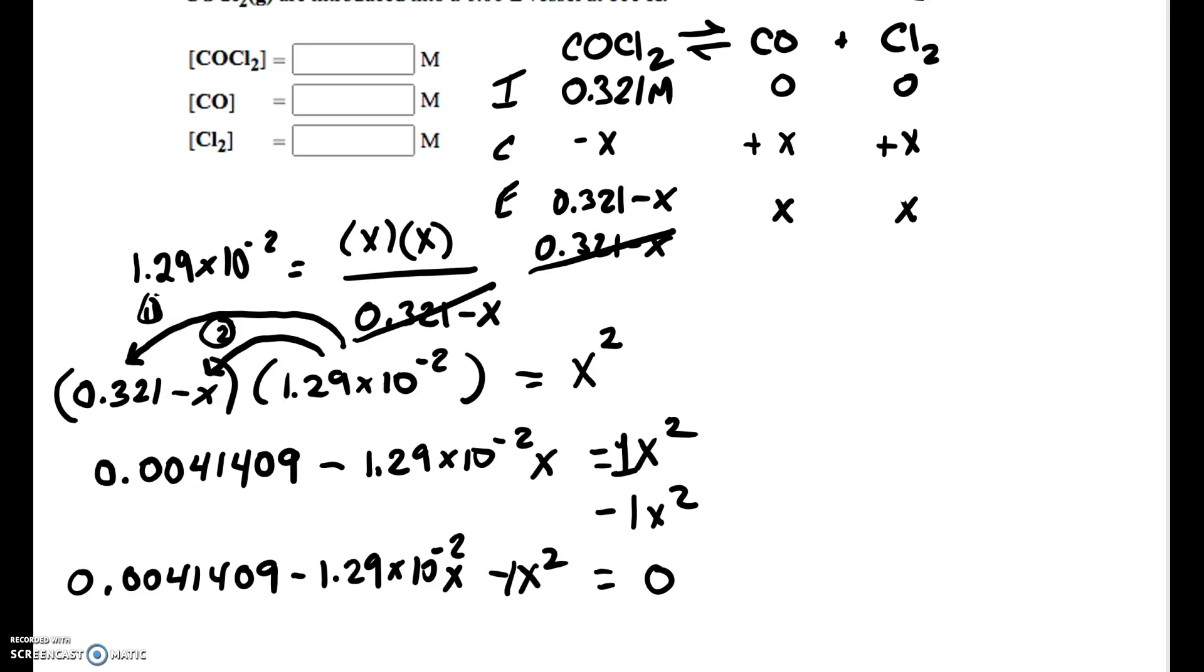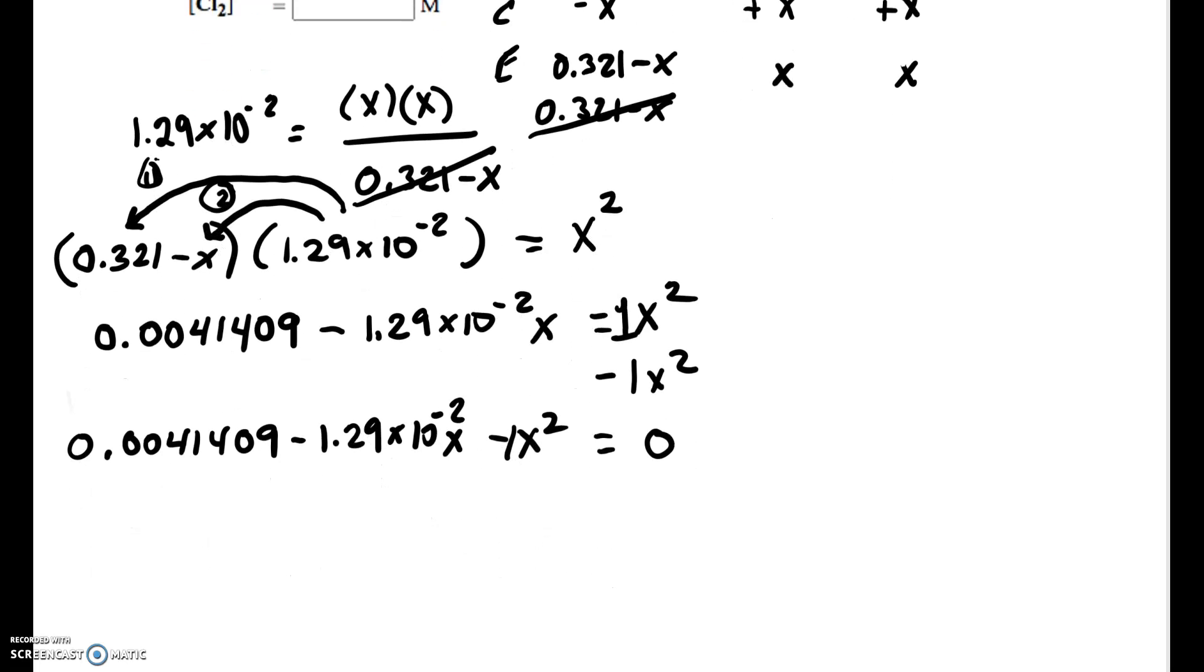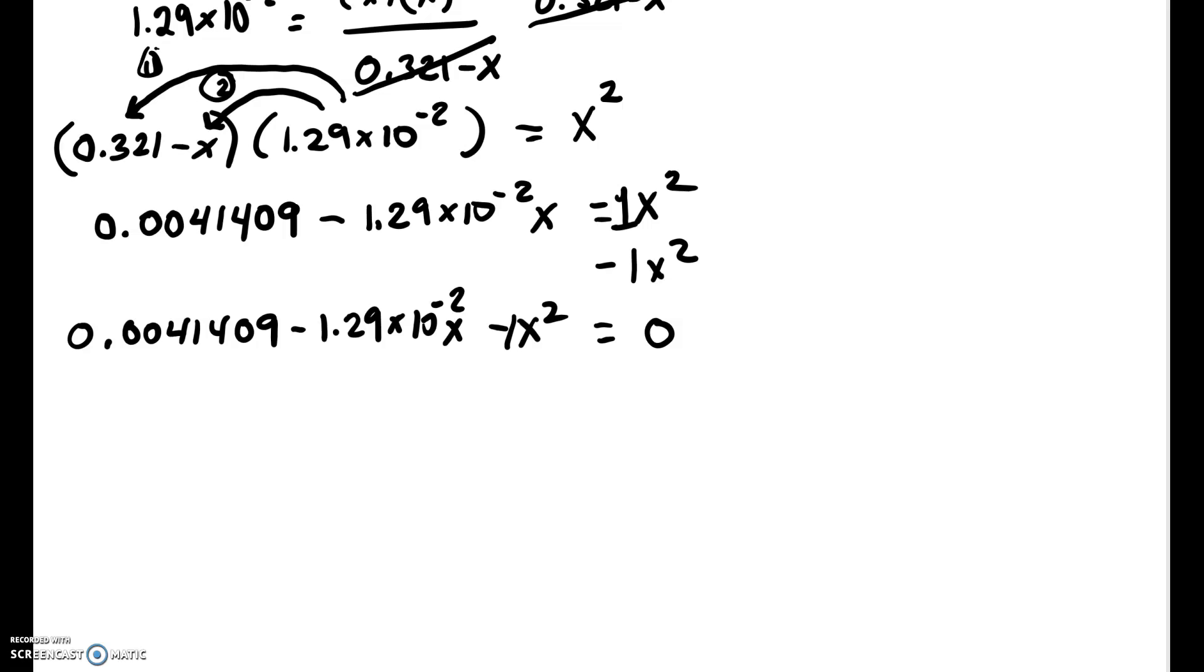Let's put the quadratic formula right up here. So what you need to realize is once we get this set to 0, the number that goes with your X squared is your A term, the number that goes with your X is your B term, and the number without an X is your C term. Now, realize in this case, this B term is negative.